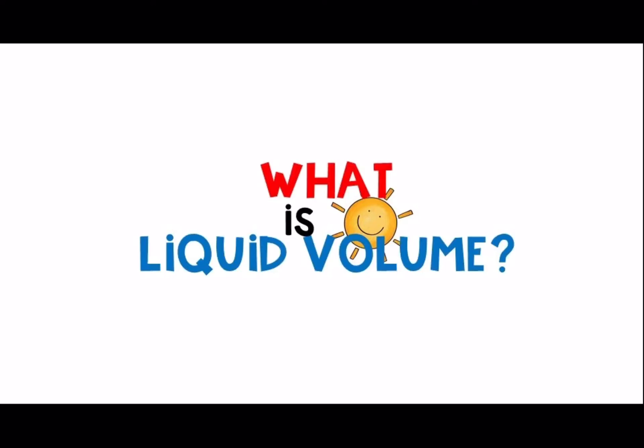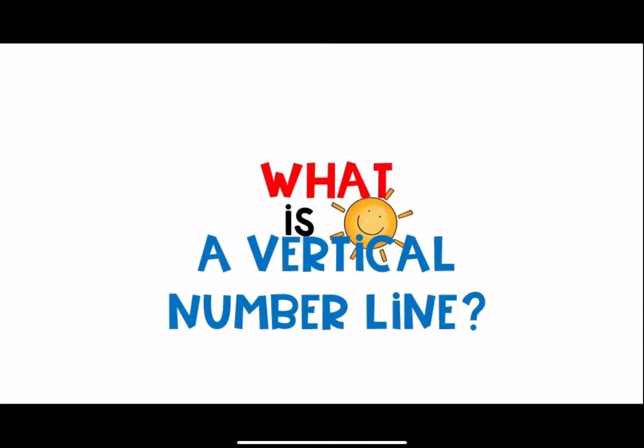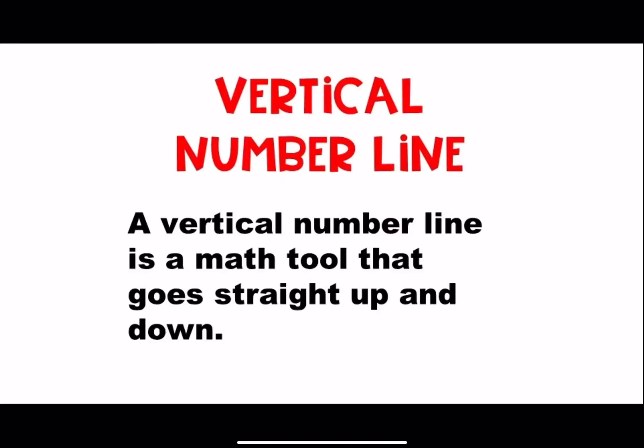So what is liquid volume? The amount of space taken by a liquid is called liquid volume. And what is a vertical number line? A vertical number line is a math tool that goes straight up and down.